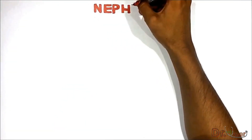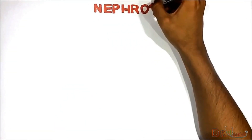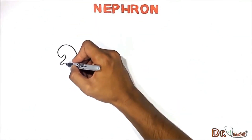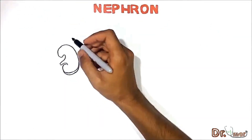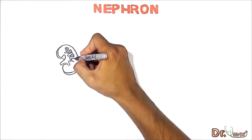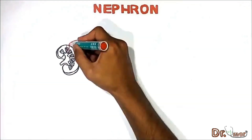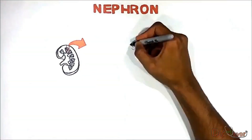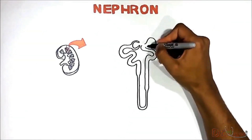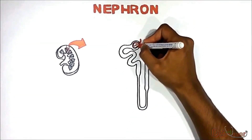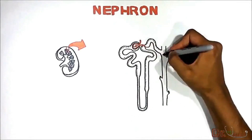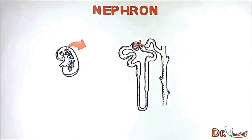In this video we'll talk about the nephron. The basic structural and functional unit of the kidney is called the nephron. Each kidney contains more than 1 million nephrons. A nephron is a tube-like structure which is made up of many different cells and composed of the following parts.